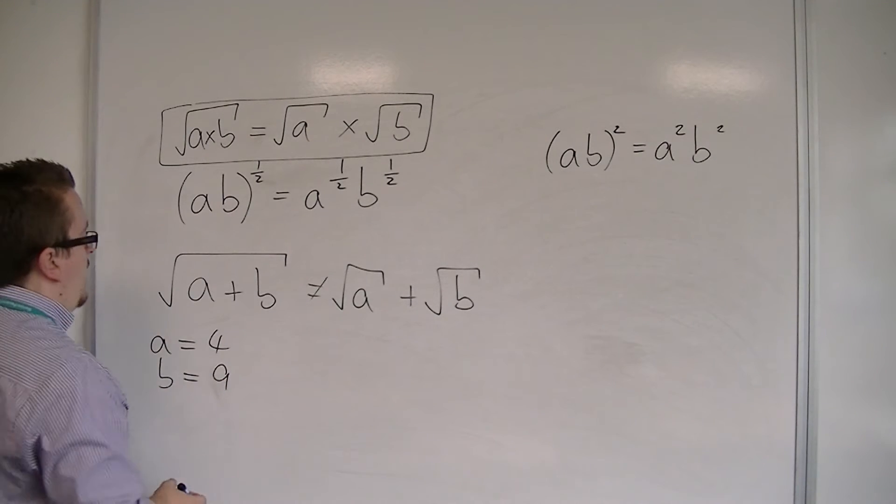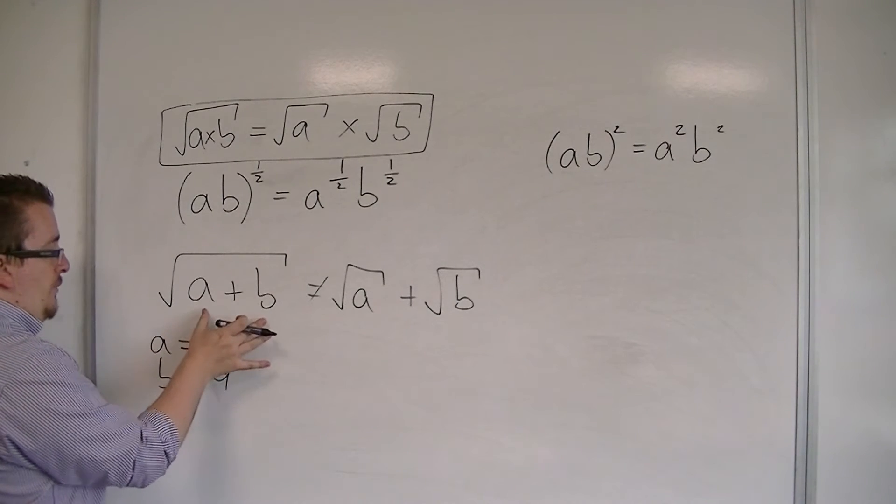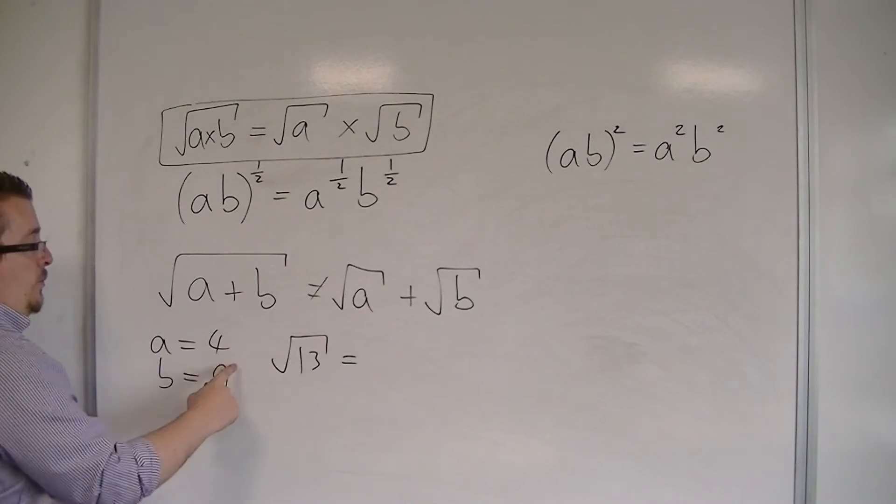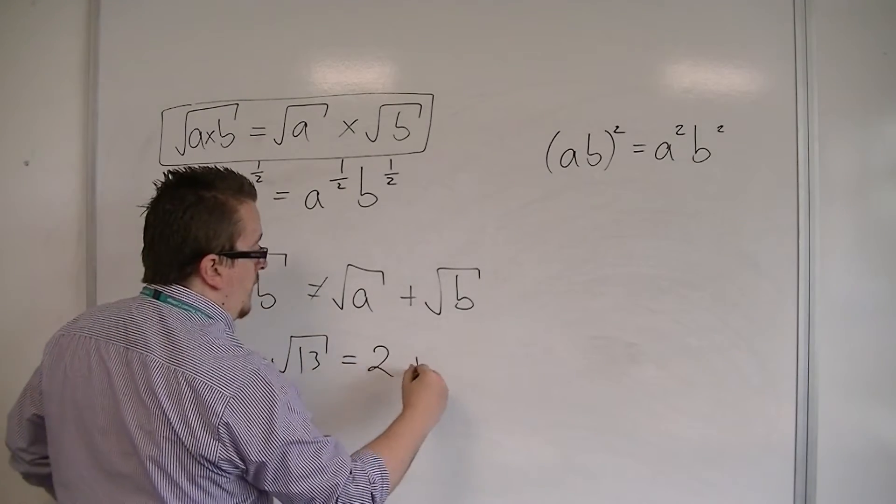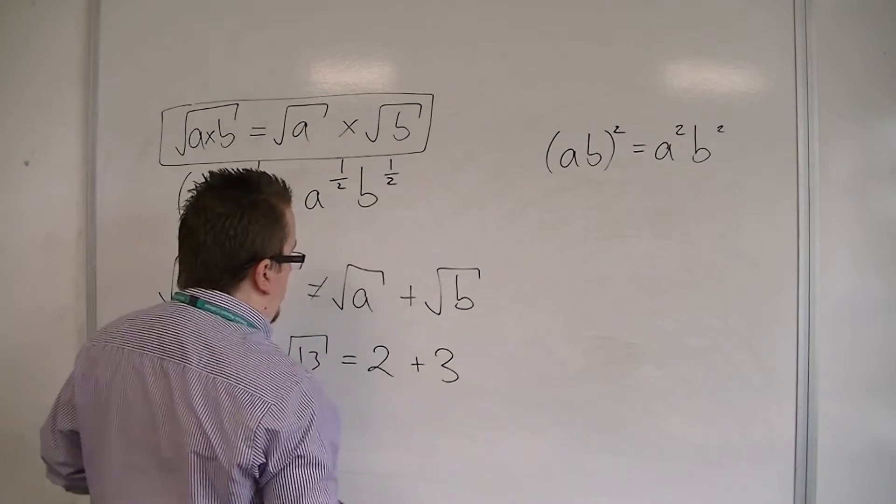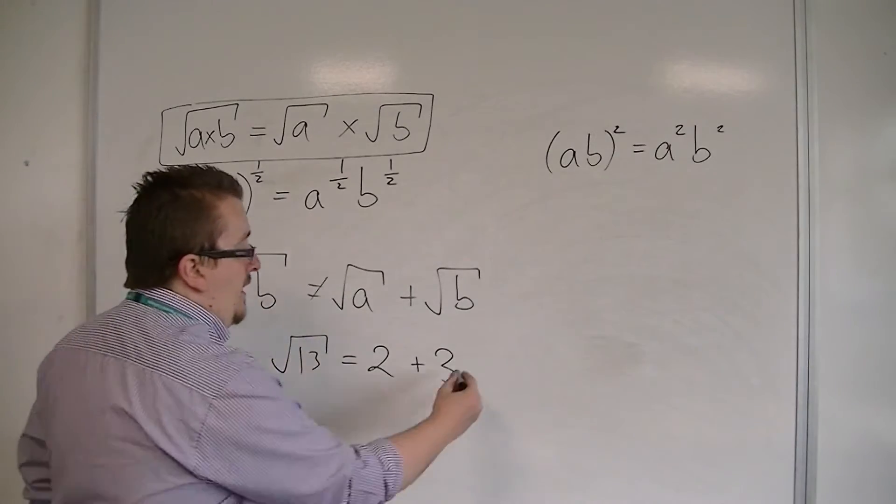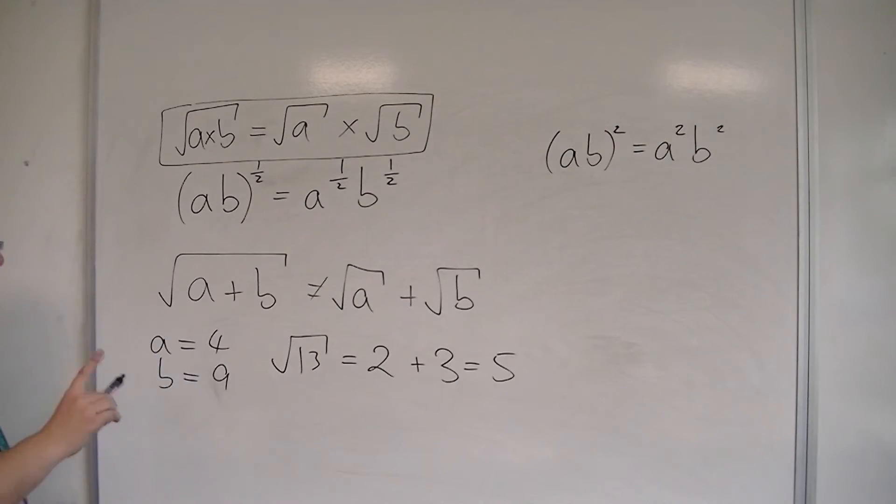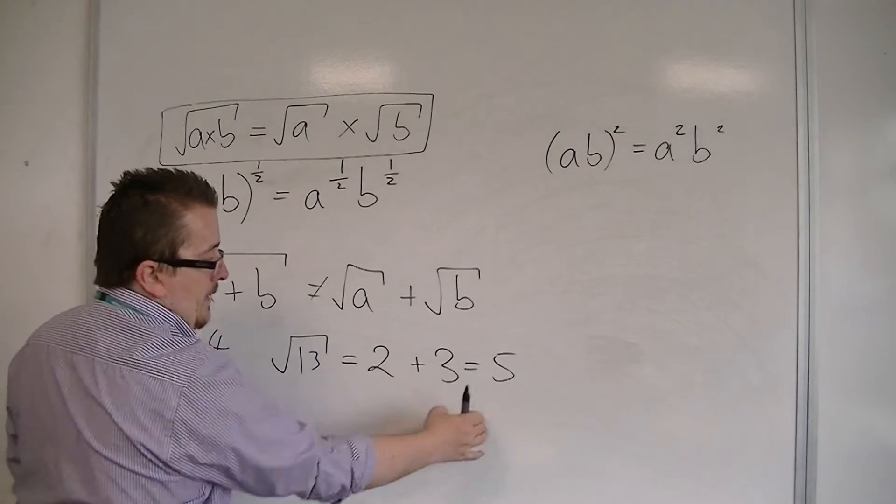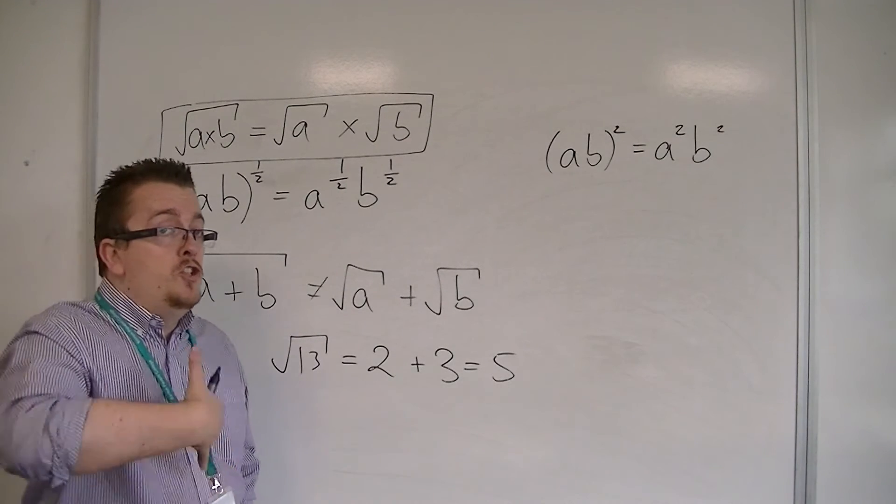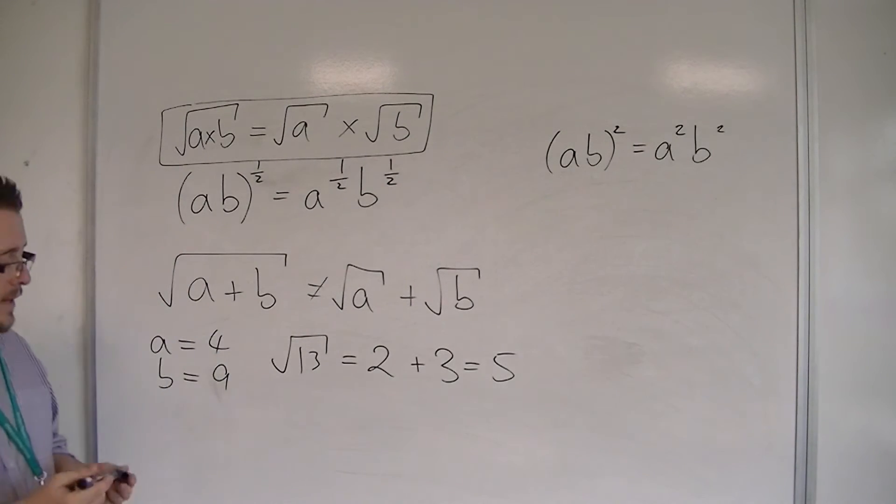Then what we would be saying is that the square root of a plus b, which would be root 13, is the same as the square root of a, which we know to be 2, plus the square root of b, which we know to be 3. So I would be saying that root 13 is the same as 5. But I know that the square root of 25 is 5. So something has gone wrong. So you can show that it doesn't work with a simple example.